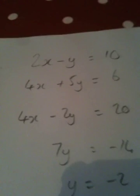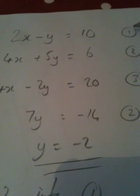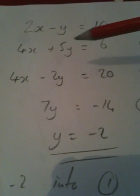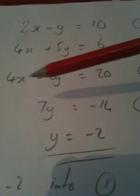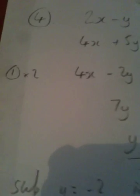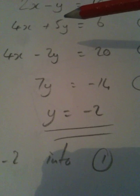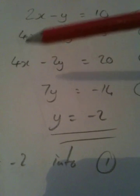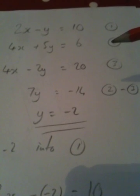Question number 4. Solve algebraically the system of equations. 2x minus y equals 10, 4x plus 5y equals 6. So simultaneous equations question. I'm going to call them equation 1 and equation 2. I need to make the coefficient, the amount of x's, or the coefficient, the amount of y's, the same or equal. So I have 4x plus 5y here. If I double the top one, I'll have 4x minus 2y equals 20. Call that equation 3, and I've written down that I'm doing equation 1 times 2.